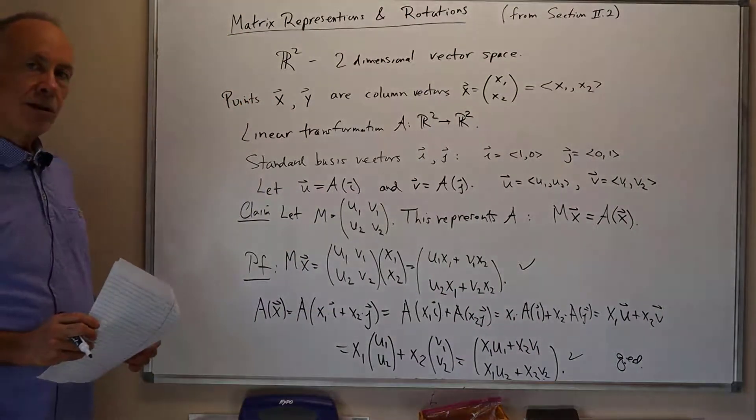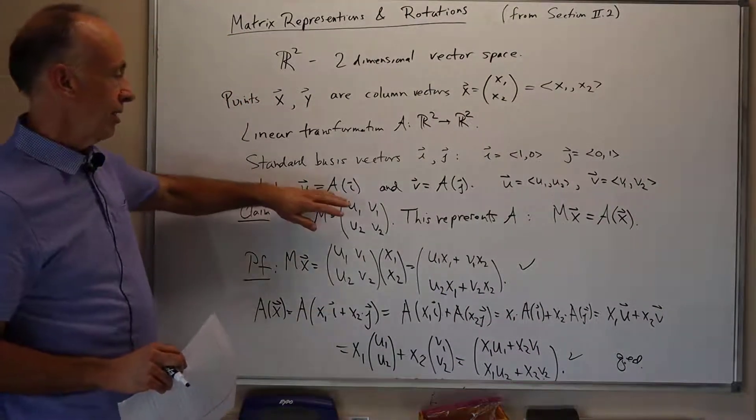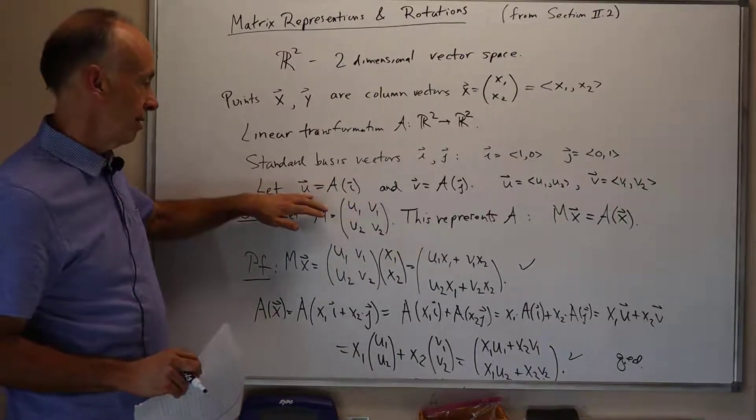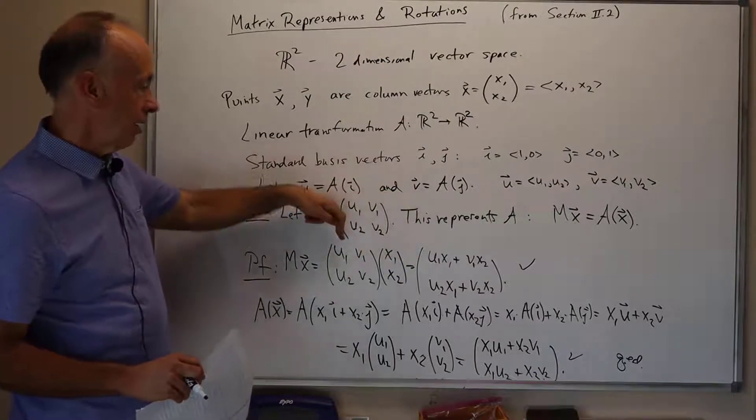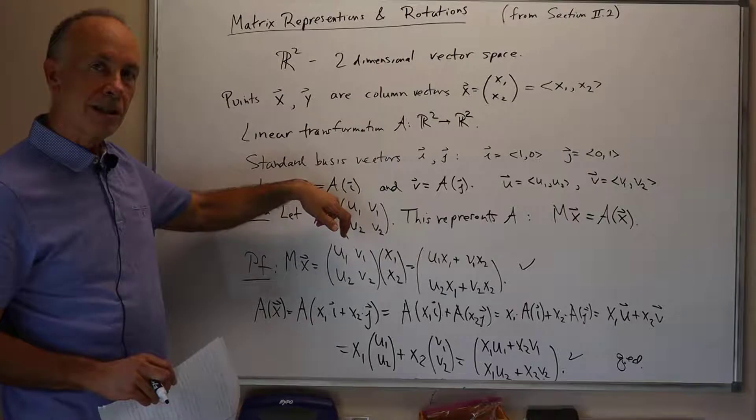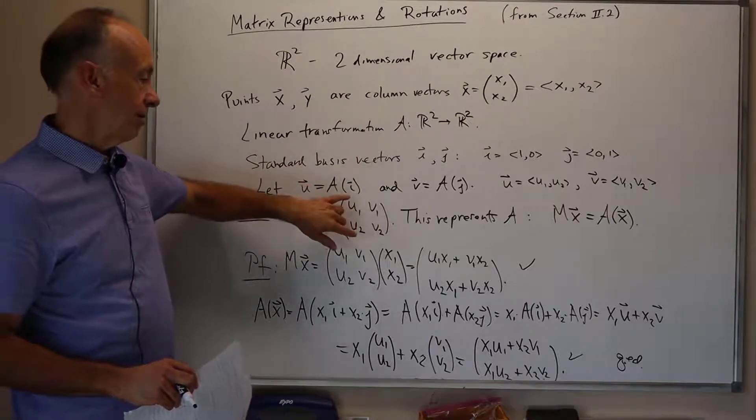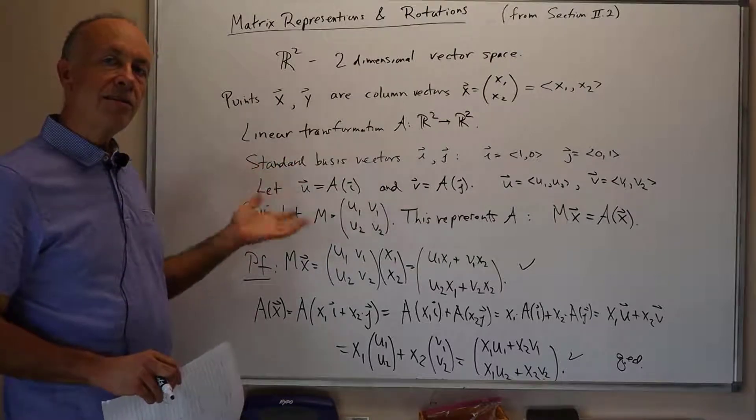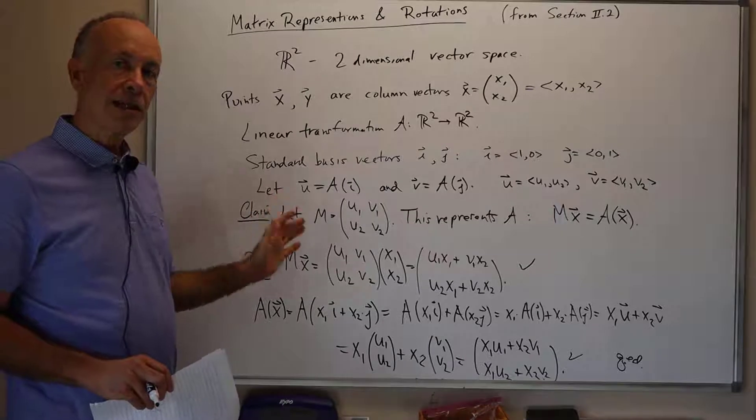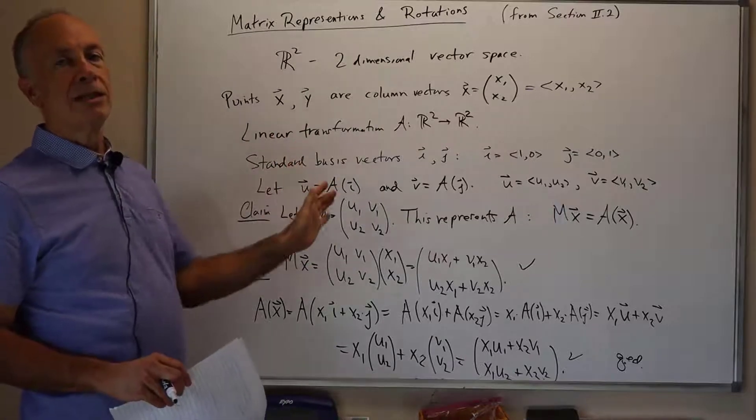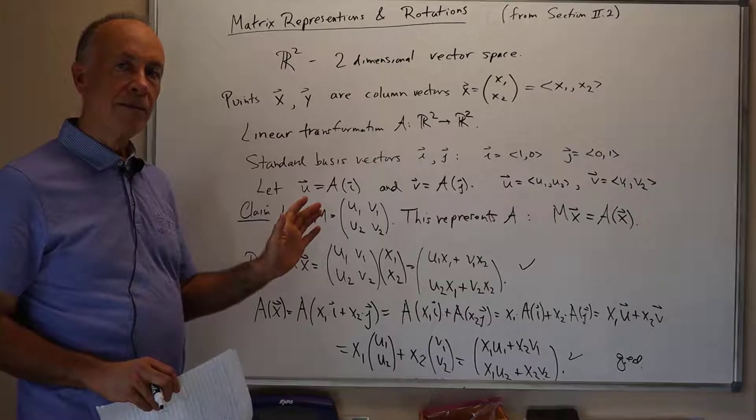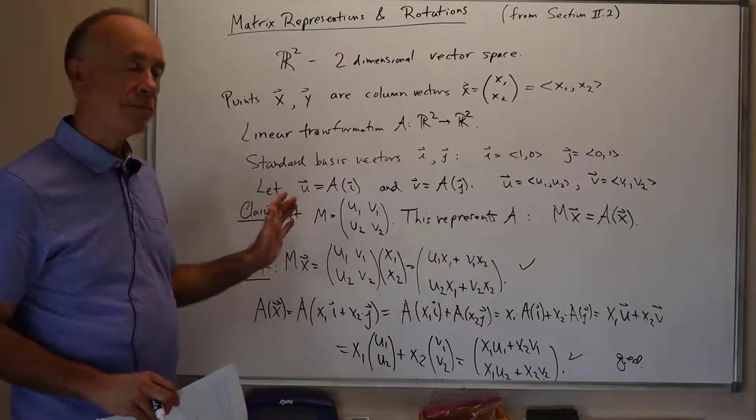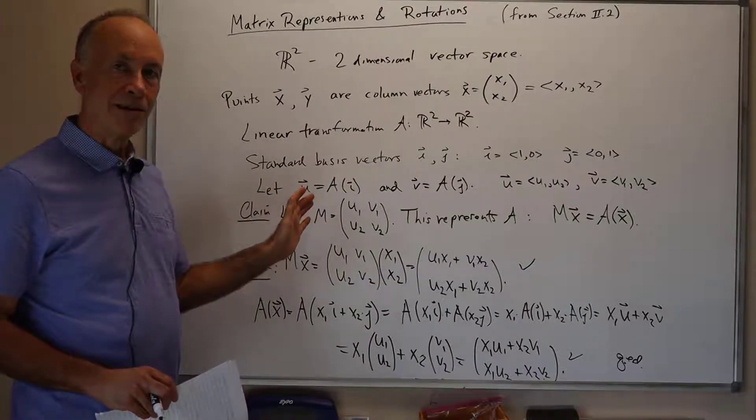So the moral of the story here is that we look at the action of the transformation on the standard basis vectors. That gives us values u and v. The columns of the matrix M are equal to the images, the values of A on the vector i and the vector j. This gives us a very intuitive way to look at what a matrix means: the columns mean the images of the linear transformation on the standard basis vectors.